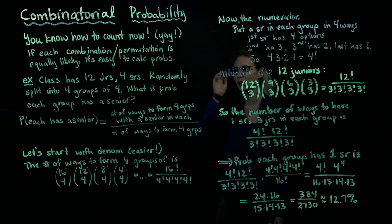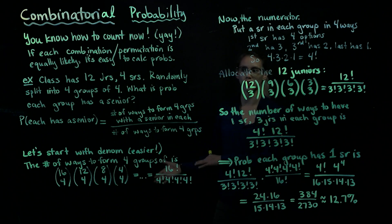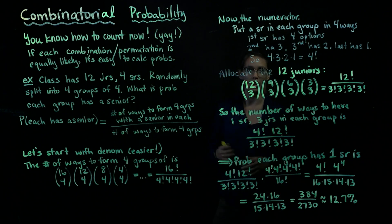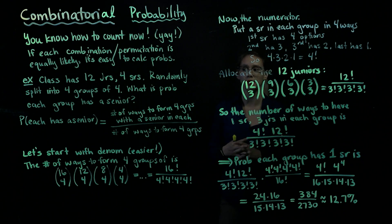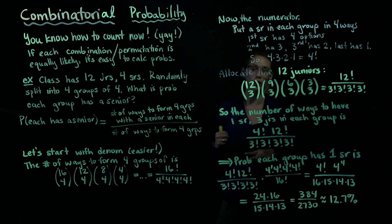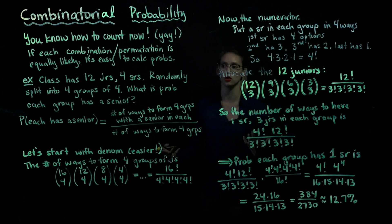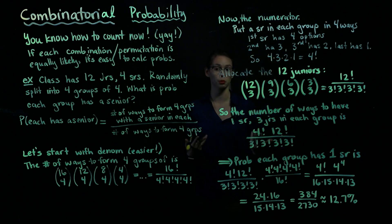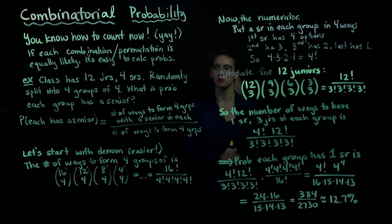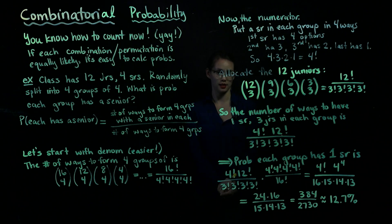In this example we have a class that has 12 juniors and four seniors, and we're trying to split the students up into groups of four so that they can do some group project. What is the probability that each group will have a senior?